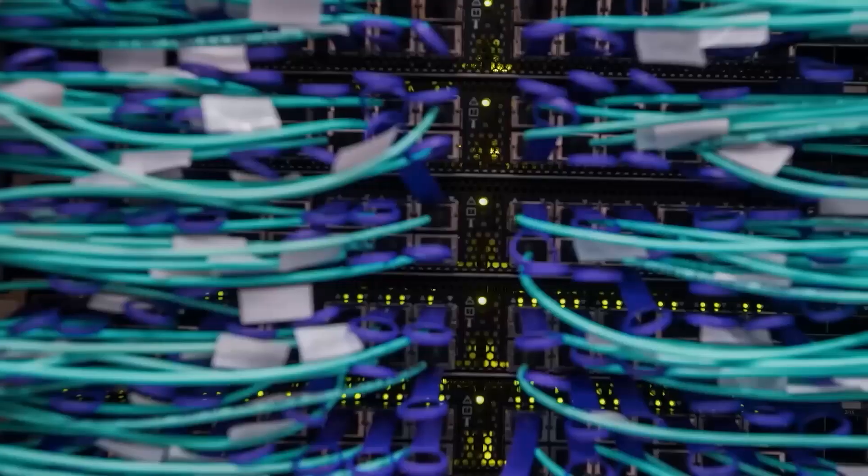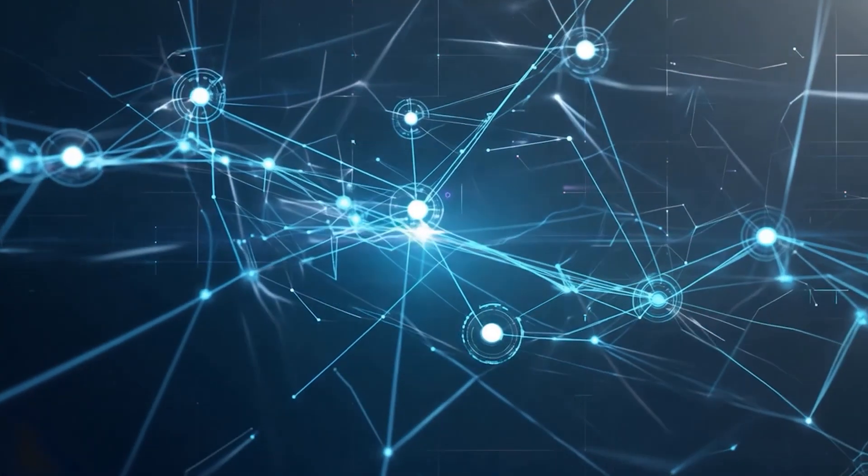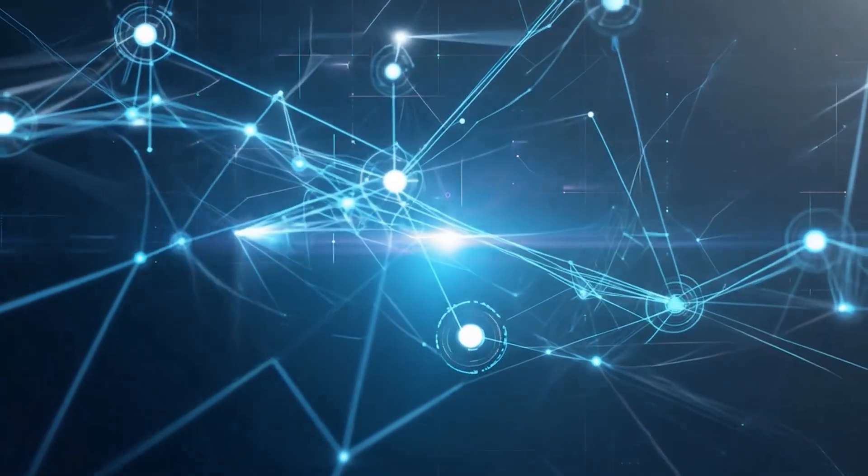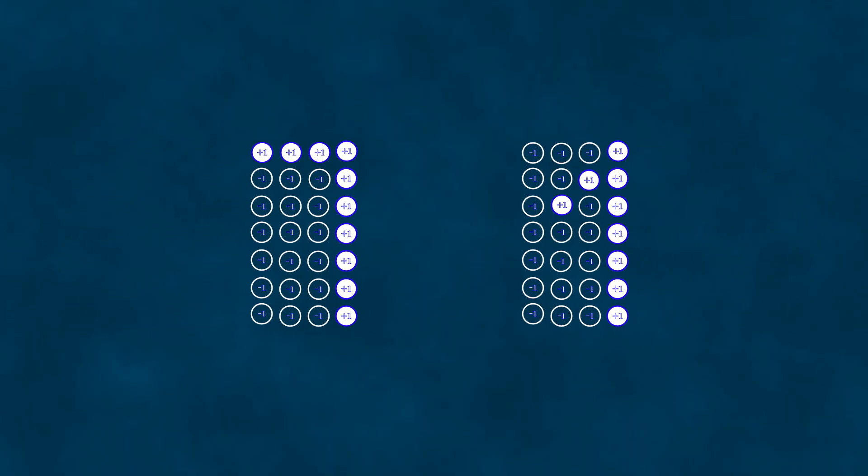Well, almost always. Almost always because the Hopfield network soon encountered a problem with recognizing similar images. Let's take, for example, the numbers seven and one. They are quite similar. Both are two lines connected at a specific angle. In fact, you could draw seven and one in such a way that even the human eye would struggle to identify which number is shown. For a neural network, this would be even more difficult due to the specifics of the data processing algorithm proposed by Hopfield.